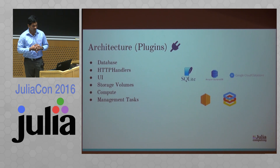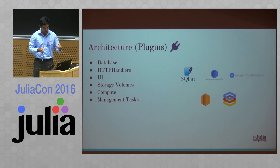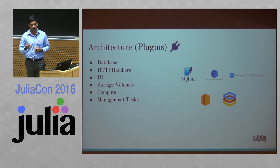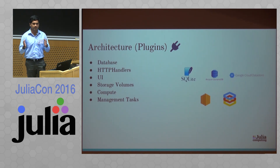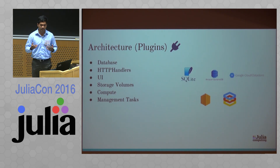JuliaBox development uses a plugin-based architecture for loosely coupling whatever you want to add. So if you've installed JuliaBox on your laptop, you might have used SQLite as your database plugin. But on Amazon you might need to use DynamoDB, or on Google you might require Google Cloud Datastore. These are modeled as plugins so you don't have to edit the main JuliaBox code. Similarly, we implemented the migration button using the UI plugin, and you get other plugins as well.